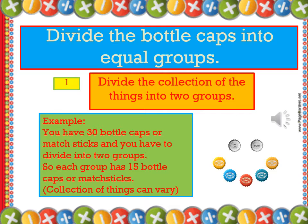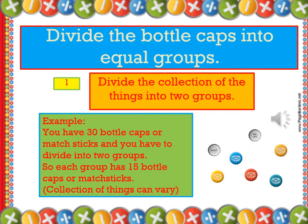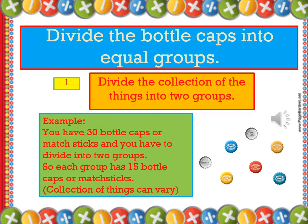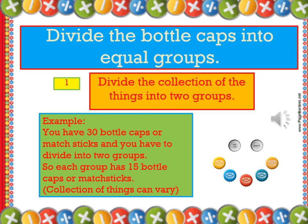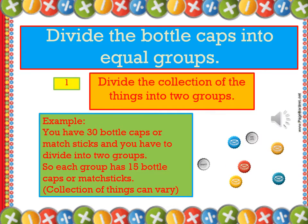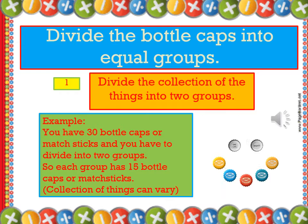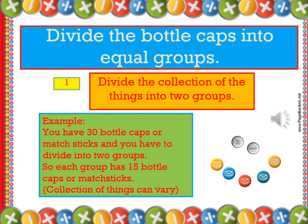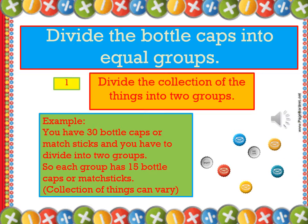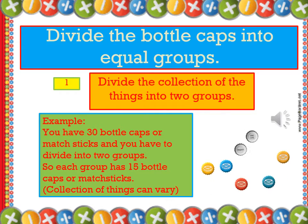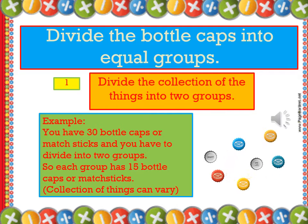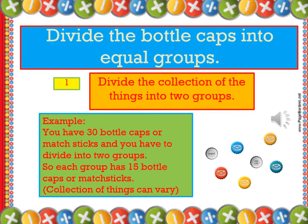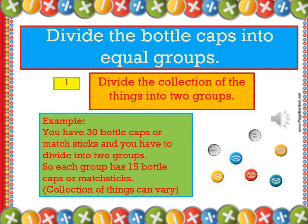Let's begin the activity. What you have to do? You have to divide the bottle caps into equal groups. For example, you have 30 bottle caps or matchsticks and you have to divide them into two groups — each group will have 15. You can take any type of collection, like matchsticks, bottle caps, or buttons, and divide into equal groups.